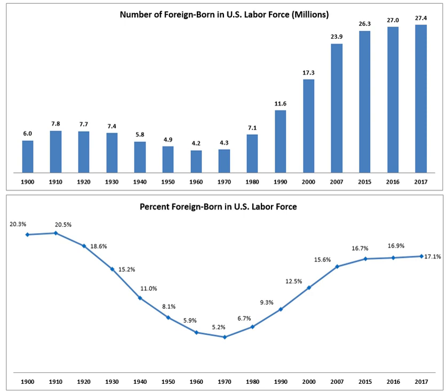The Immigration and Nationality Act of 1965, H.R. 2580, Pub.L. 89-236, 79 Stat. 911, enacted June 30, 1968, also known as the Hart-Cellar Act, changed the way quotas were allocated by ending the national origins formula that had been in place in the United States since the Emergency Quota Act of 1921.